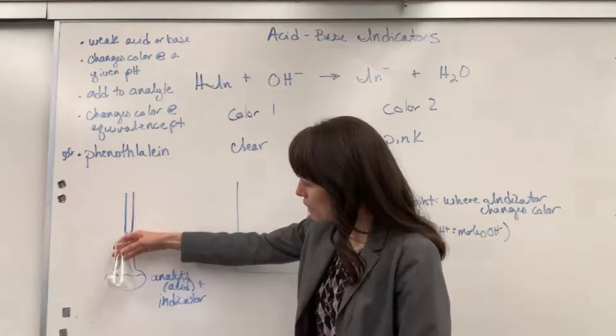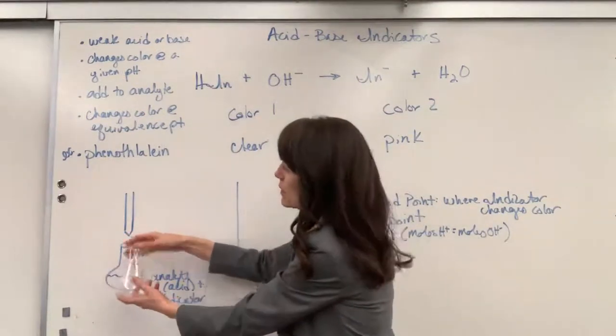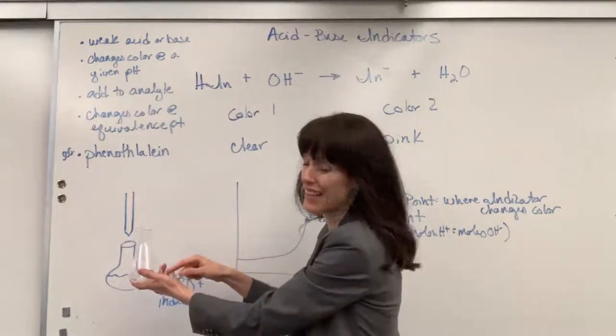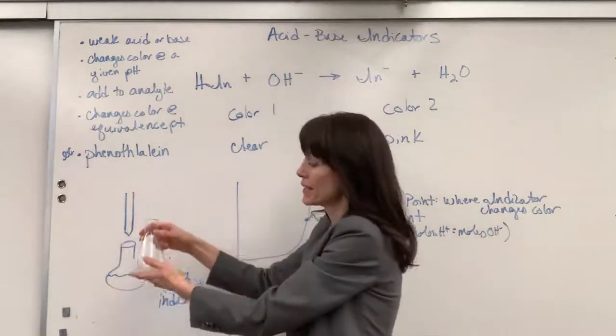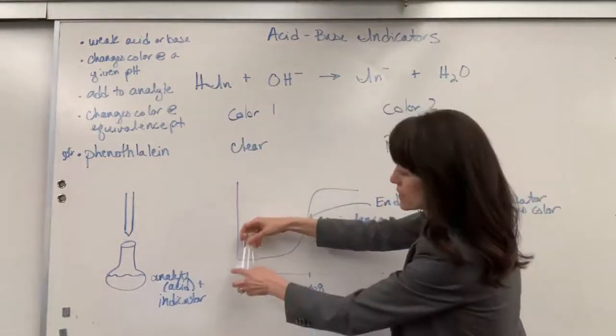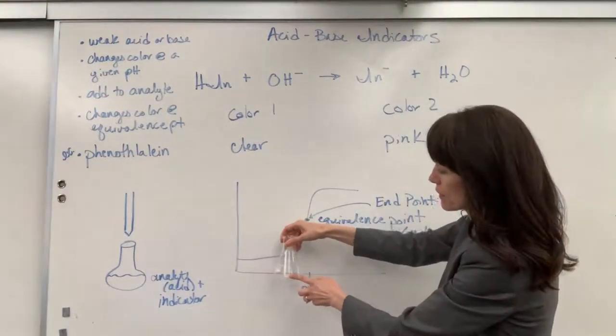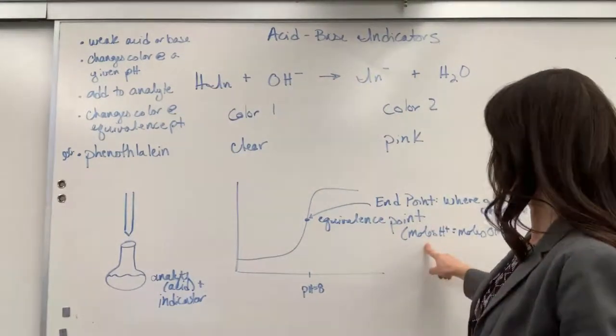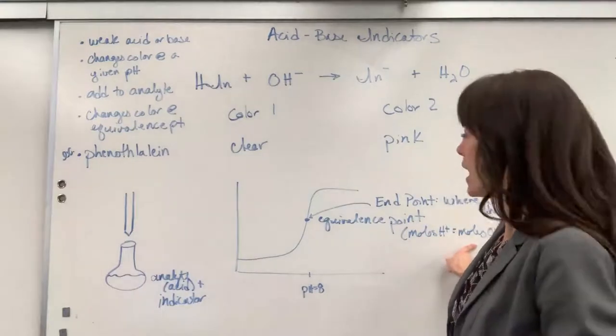So you have your analyte, that's the weak acid that's in here. Here's your titrant, the strong base. You've put your drops of indicator, and then you start adding drops. Okay, if this is a phenolphthalein example, it stays clear, clear, clear, clear, clear, clear, clear, until it hits that beautiful equivalence point where the moles of the acid equal the moles of the base.